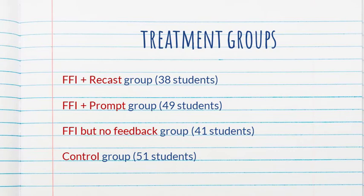There were four treatment groups. One group received the form-focused instruction plus recasts. Another received form-focused instruction plus prompts. Another group only got the form-focused instruction but no feedback. And finally, there was a control group that didn't get anything — no instruction, no feedback. The teachers essentially just kept going with the curriculum.